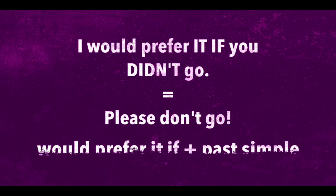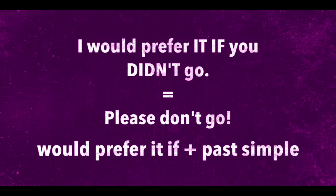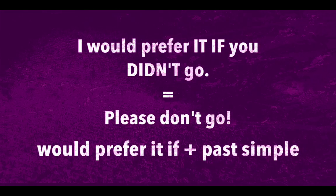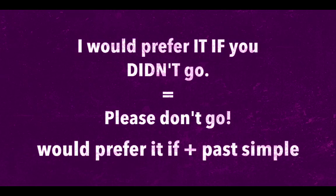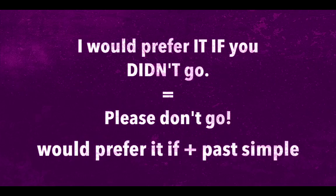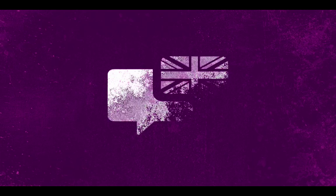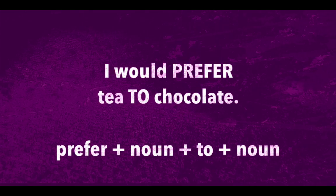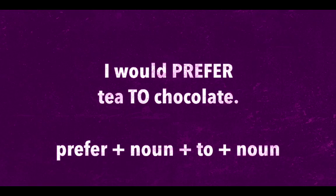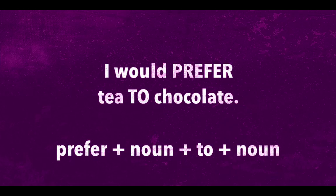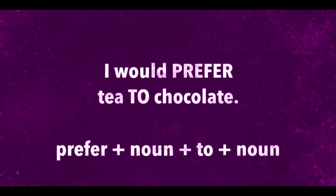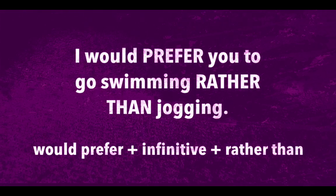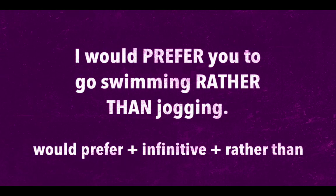Another alternative is 'would prefer.' Use 'would prefer it' with past simple to talk about preferences in the present. Note that the verb 'prefer' is a tricky one — when you collocate it with nouns, make sure to use the preposition 'to.' However, have a look at what happens when you combine 'I would prefer' with 'rather than.'